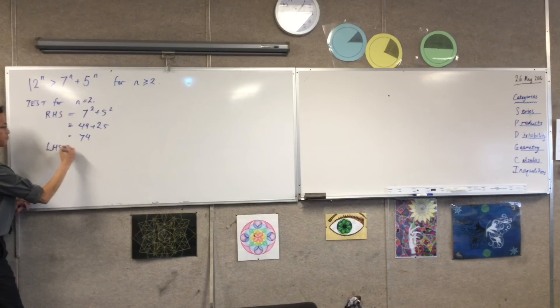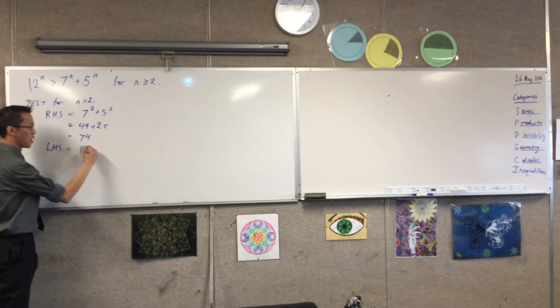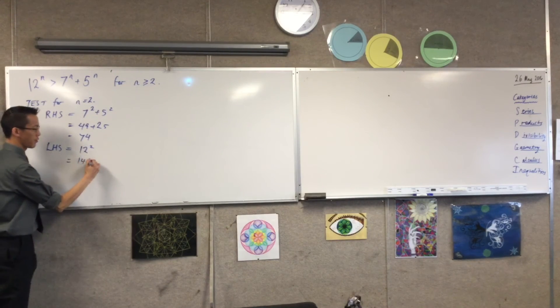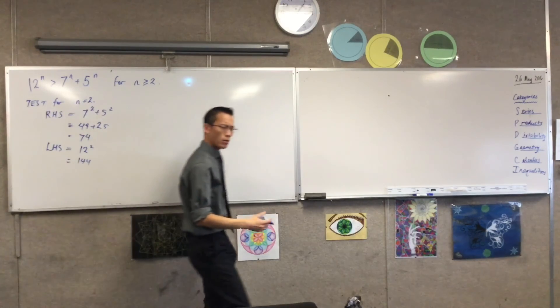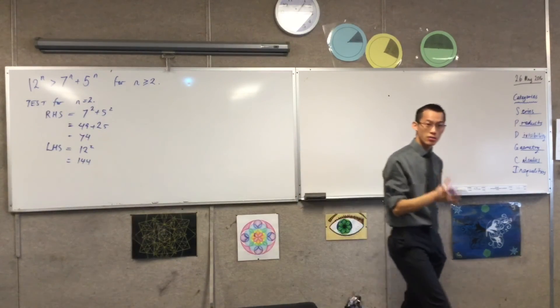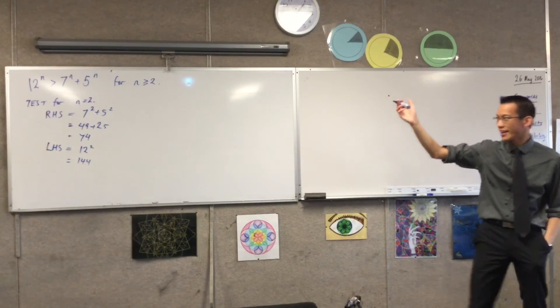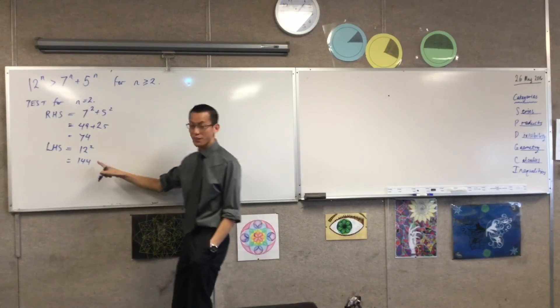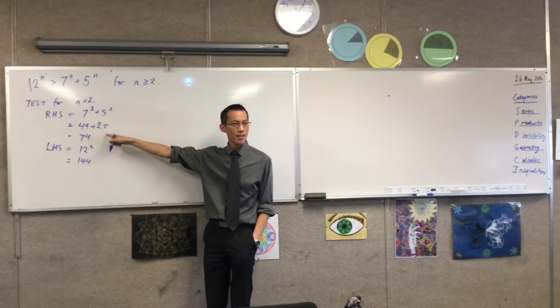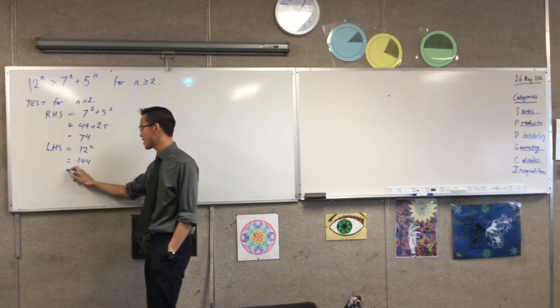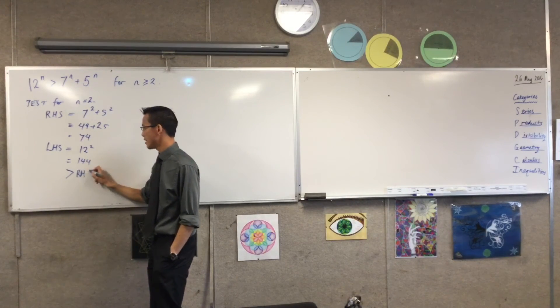Let's have a go at the left. The left-hand side is just 12 squared, which is 144. Now, at this point, what was I trying to demonstrate? I was trying to get to that inequality, right? And this number, this 144, is greater than the right-hand side. So, I can say that that is bigger.